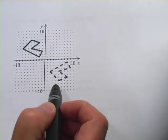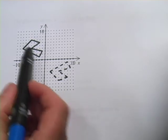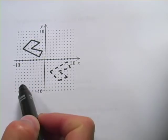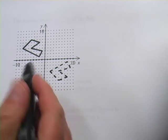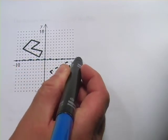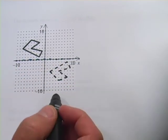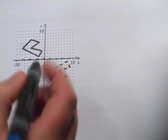So one thing to notice is that the orientation of these are opposite. They're mirror images of each other if they were reflected over the x-axis and then moved over.